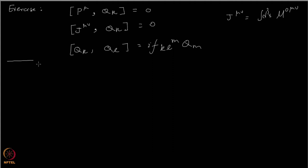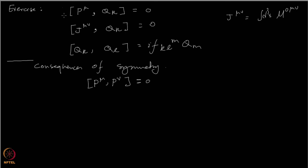We want to further explore the consequences of symmetry in a theory. Once you have done these exercises and also use P_mu and P_nu commuting, we see: the P's commute among themselves, the P's commute with Q, and the Q's commute with J_mu_nu, but Q's do not necessarily commute among themselves.